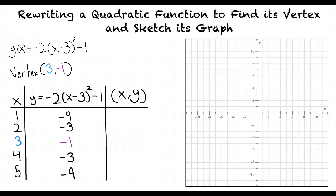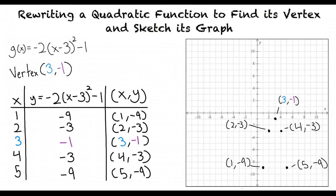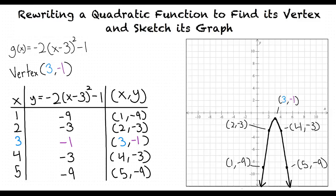We will find our y values by inserting our x values into the new form of our function. Our results would be the points 1, negative 9; 2, negative 3; 3, negative 1; 4, negative 3; and 5, negative 9. With these points, we can now graph our function.